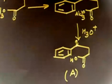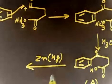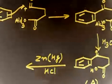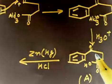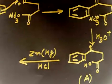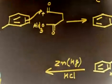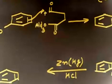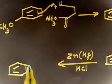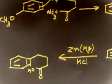Now the next step is: if I treat this with Zn(Hg)/HCl — amalgamated zinc in HCl solution — everybody knows this is Clemmensen reduction. The C=O group will be converted into CH2. The carbonyl part that is only the aldehyde or ketone part. So you will have a CH2 group and COOH. This is your product B.